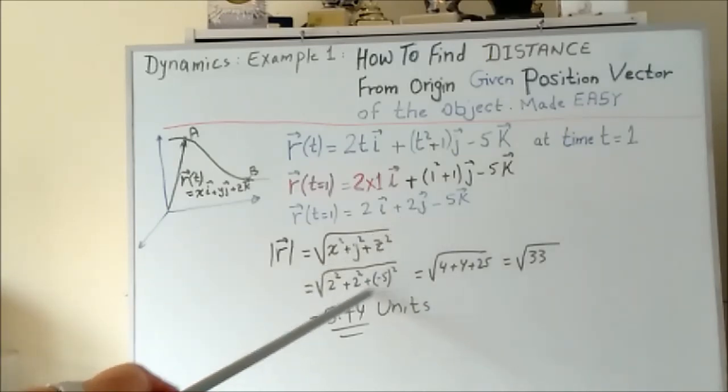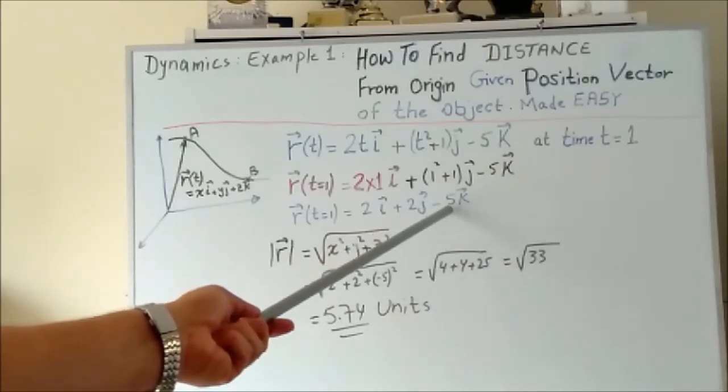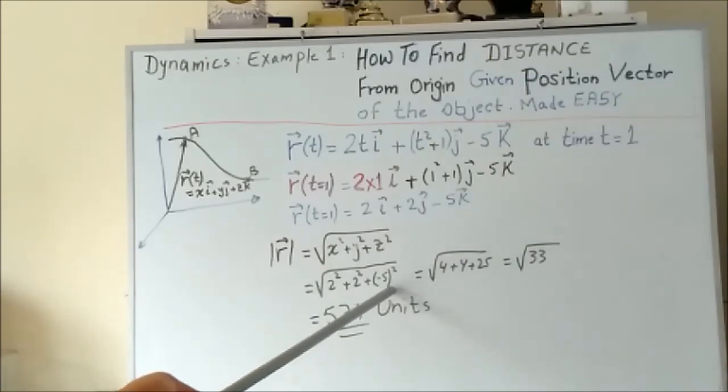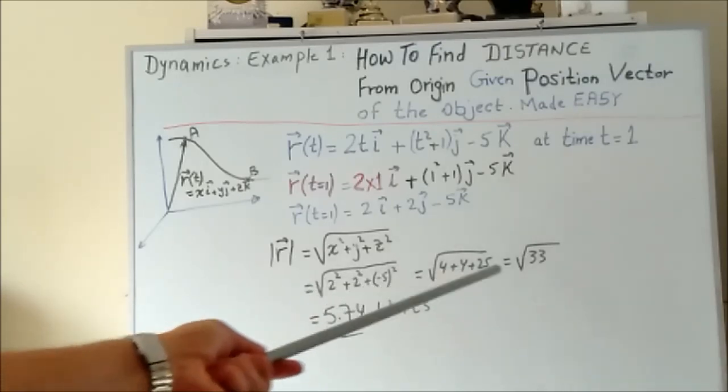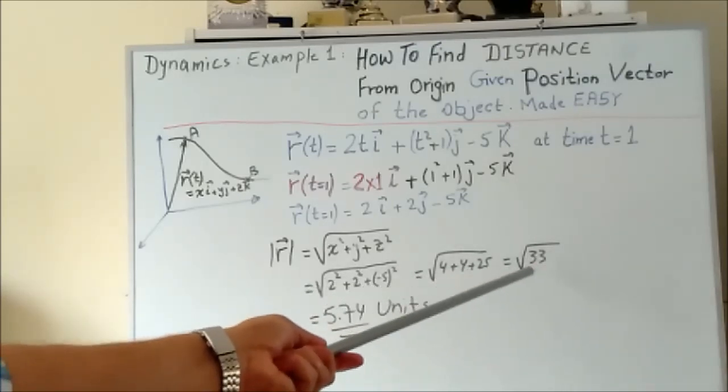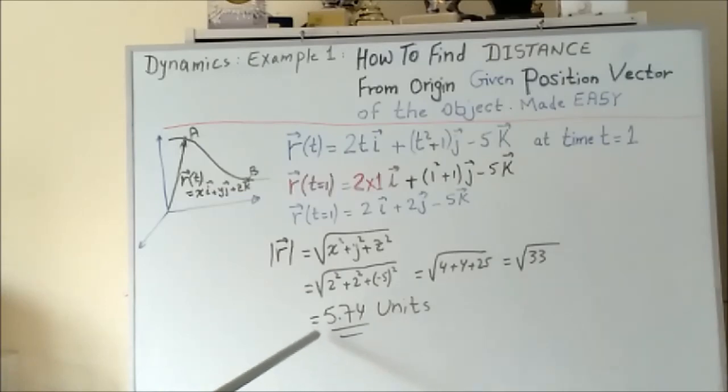Simplifying that gives you √(4 + 4 + 25), which gives you √33. So the distance is 5.74—that's the answer.